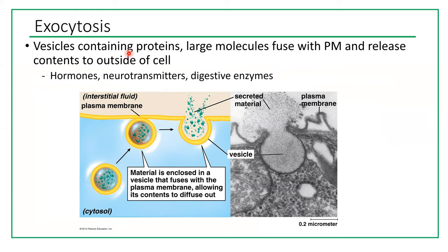Exocytosis is when vesicles containing proteins or large molecules move toward the plasma membrane, fuse with it, and release their contents to outside the cell. Examples include how cells release hormones, neurotransmitters, and digestive enzymes. This obviously requires ATP and energy — it is active transport, specifically vesicular transport.